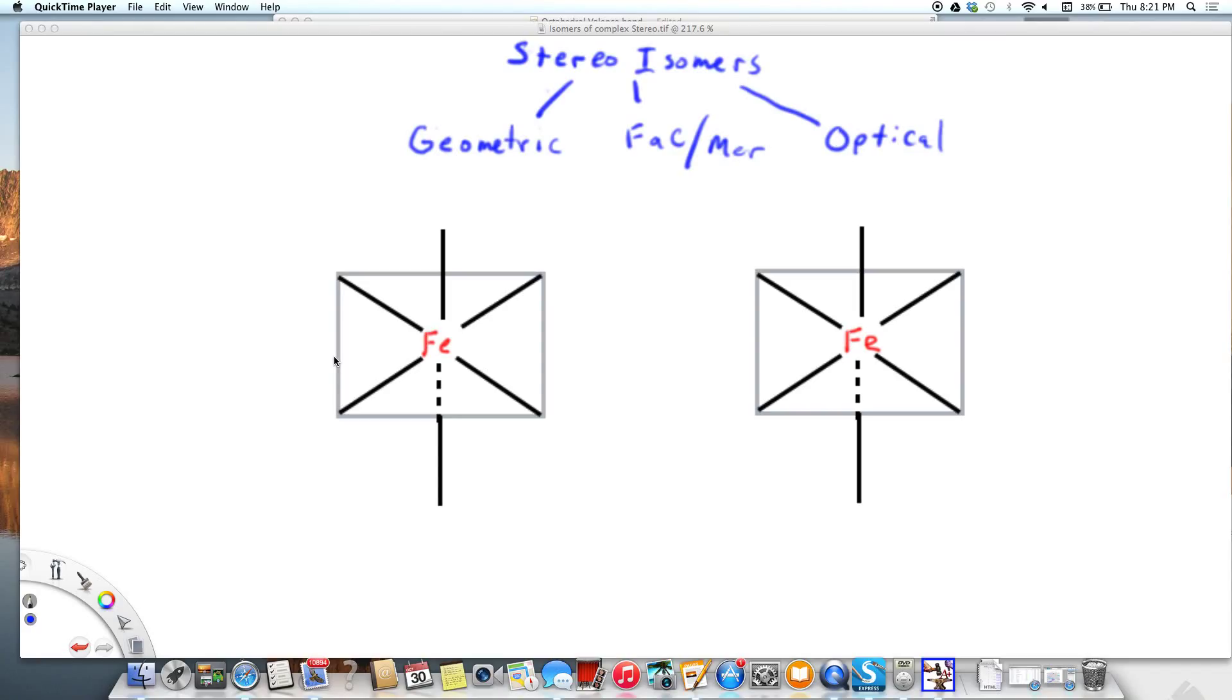I would like to look at stereoisomers and we're going to look at one particular subset called geometric isomers. These are the ones you know as cis and trans.